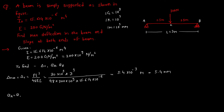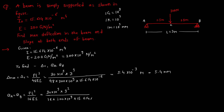Next, theta_A and theta_B — both are equal. The formula is: θ = PL² / 16EI. Substituting P = 30 × 10³, L² = 9, divided by 16 × 200 × 10⁹ × 15.614 × 10⁻⁶, you get 5.4 × 10⁻³ radians. Very important: theta always comes in radians. This is the maximum deflection and the slope at ends.